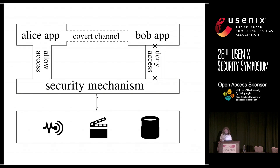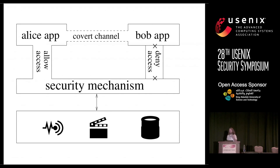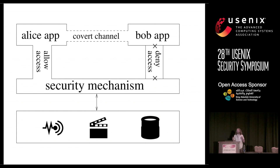A covert channel involves two apps — here we have Alice app and Bob app. There are sensitive resources, sensors, actions, and data being protected by some security mechanism. The mechanism allows Alice to access the sensitive resources but denies Bob access. A covert channel is a communication channel between the Alice app and Bob app, where Alice uses her privilege with the security mechanism as a front for Bob, allowing Bob to get access by communicating via the covert channel that is not monitored by the security mechanism.